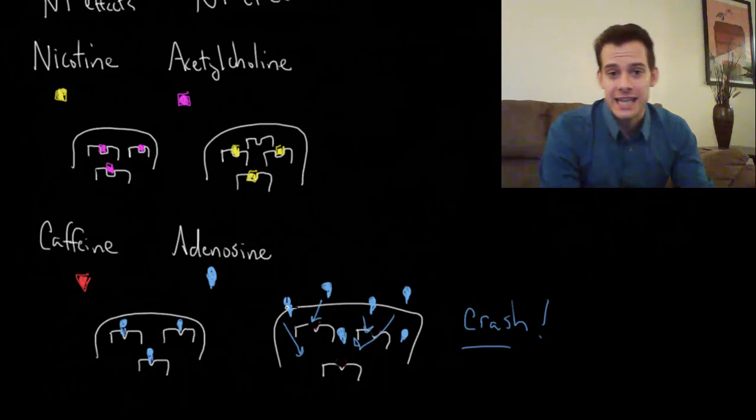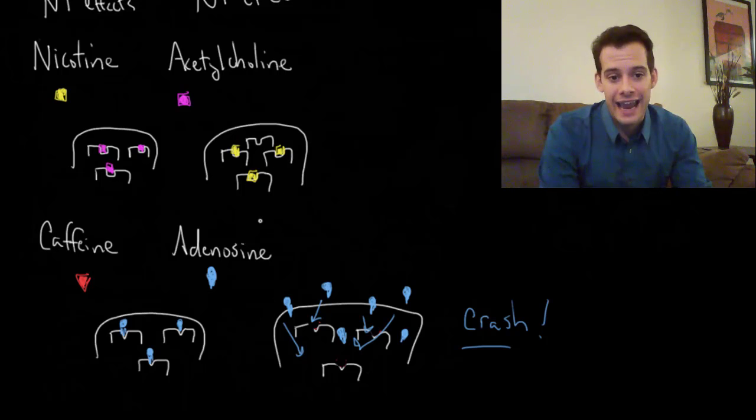Okay, so those are some examples of an agonist drug and an antagonist drug at the receptor sites on postsynaptic neurons. I hope you found this helpful. If so, please like the video and subscribe to the channel for more. Thanks for watching.